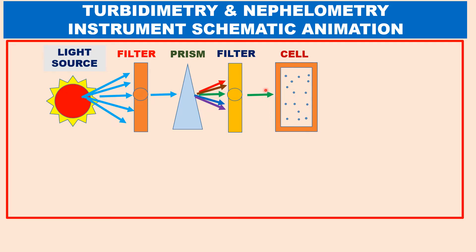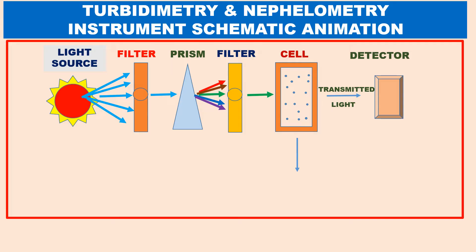The monochromatic light is allowed to pass through a cell containing suspensions. The transmitted light is detected by a photomultiplier tube — this is turbidimetry. In nephelometry, the photodetector is placed in the direction of the incident beam. Whereas in nephelometry, the scattered light is measured at right angles to the direction of the incident beam — that is, perpendicular to it. The photodetector is placed perpendicular to the incident beam where scattered light is measured.